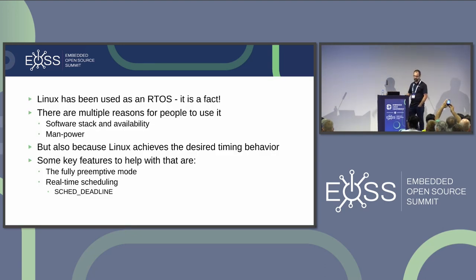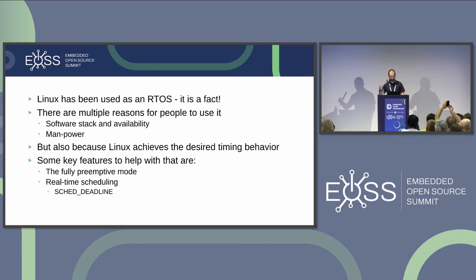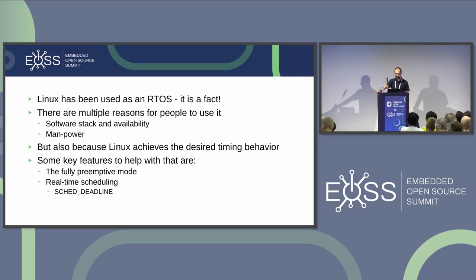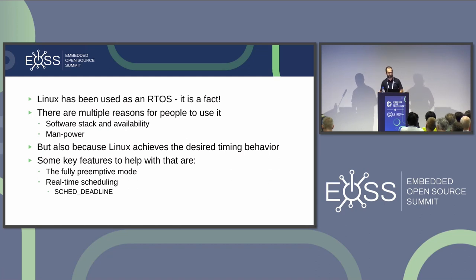We've been talking a lot about real-time Linux. Linux has been used as a real-time operating system — it's a fact. Many people might say it's not a real-time OS because of its general-purpose nature, but Linux is able to deliver reasonably good timing behavior. Many people look at Linux as a real-time OS option because the software stack is increasing — people are using AI stacks, video processing, and accelerators. These technologies were developed using Linux as the default OS, so there's a huge advantage to continuing to use Linux on these setups.